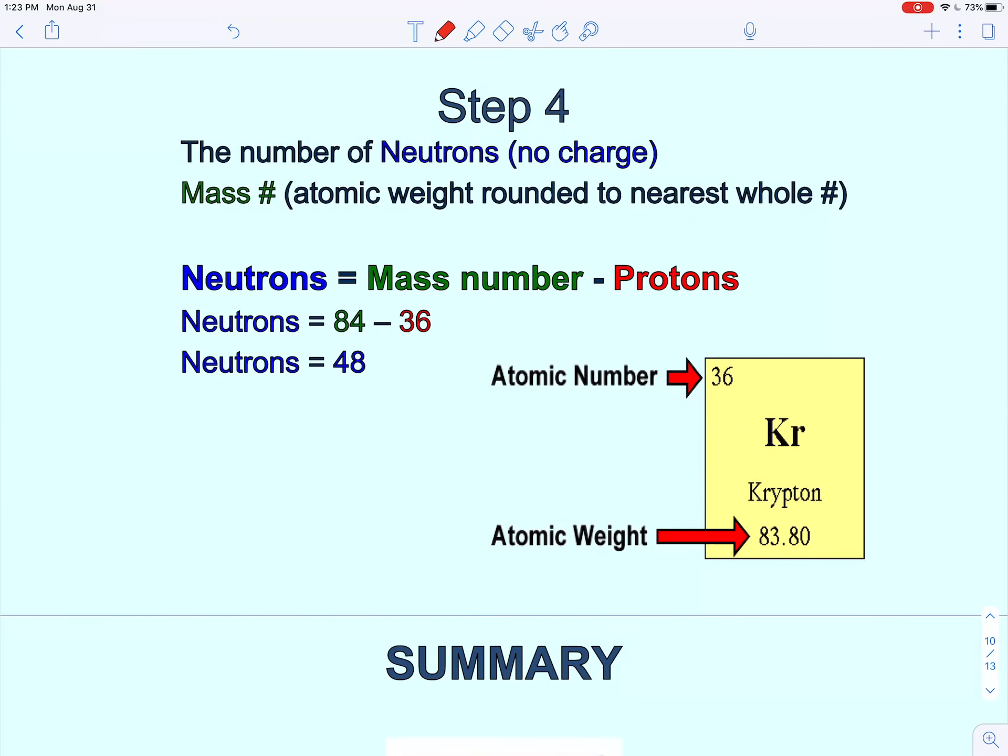Okay and to get the neutrons, this is the only one that will require a little bit of math. And so here we're going to round the mass number. So in this case we're going to take 83.80 and turn that into 84. And to get the neutrons, we said the mass mostly comes from the nucleus.